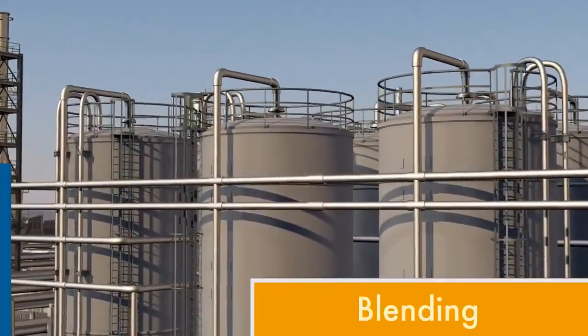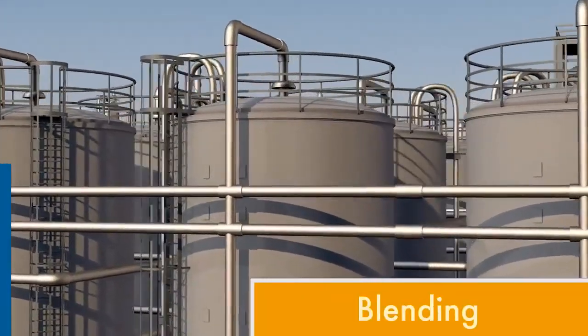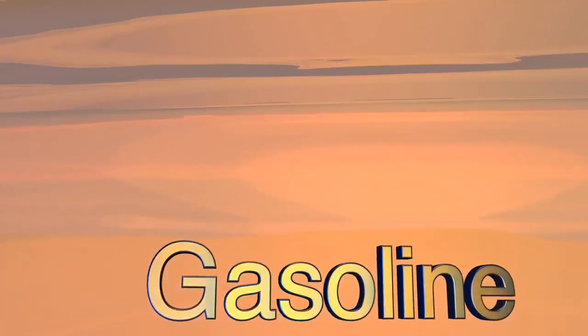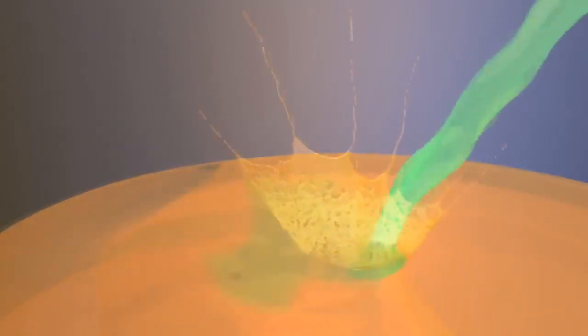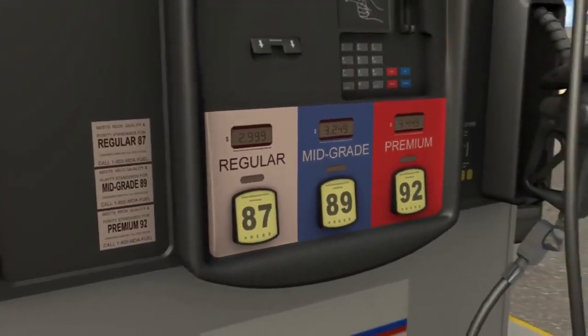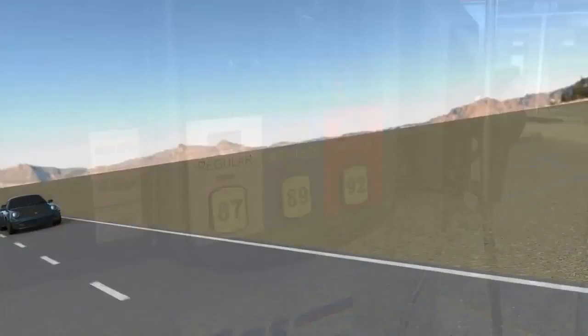Blending is a process of mixing different refinery products to make finished petroleum fuels. Gasoline, for example, is blended to achieve octane standards, creating the grades of gasoline you see at the pump – regular, mid-grade, and premium – that are necessary to meet the needs of specific engine types.